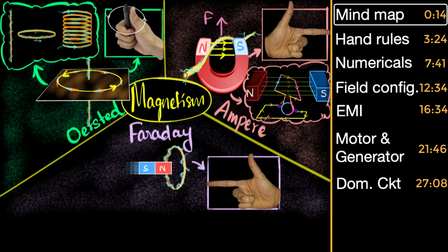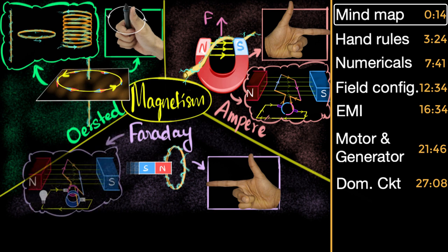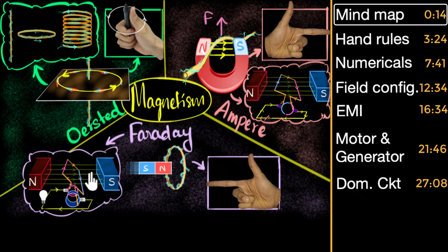What's the application of this? Well, we are generating electric current, so obviously this will be used in generators, where we are going to rotate something and that rotating device is going to produce electricity for us.